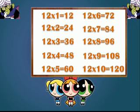Kids, I repeat table of 12, please follow me. 12 ones are 12. 12 twos are 24. 12 threes are 36. 12 fours are 48. 12 fives are 60. 12 sixes are 72. 12 sevens are 84. 12 eights are 96. 12 nines are 108. 12 tens are 120.